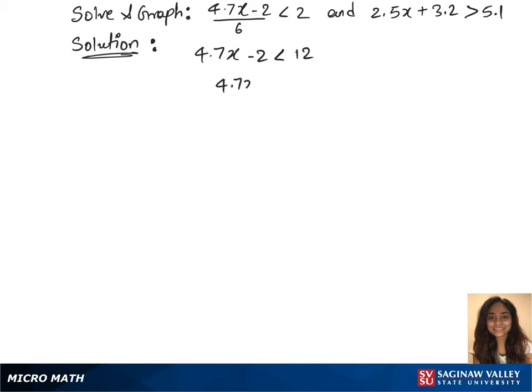In our next step we divide 4.7 on both the sides which gives us X less than 140 over 47.